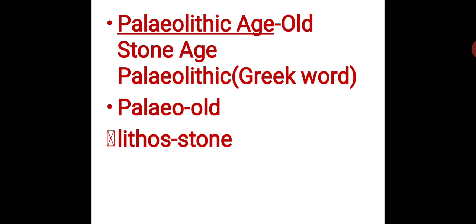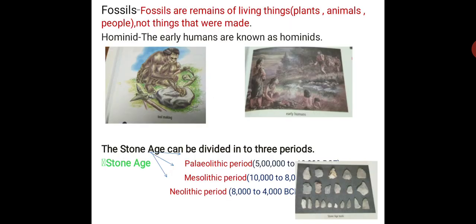Scientists have found skeletons and fossils in Africa which resemble human beings and are 4 to 5 million years old. These early humans are also known as hominids. They are considered as ancestors of humans.